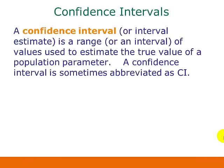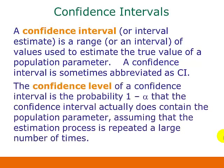Now let's talk about what confidence intervals are. A confidence interval, or an interval estimate, is a range or interval of values used to estimate the true value of a population parameter. A confidence interval is sometimes abbreviated as CI. The confidence level of a confidence interval is the probability, 1 minus alpha, that the confidence interval actually does contain the population parameter, assuming that the estimation process is repeated a large number of times.